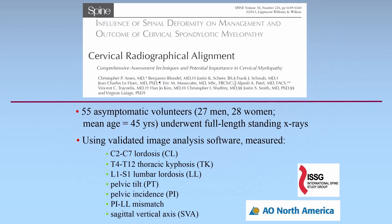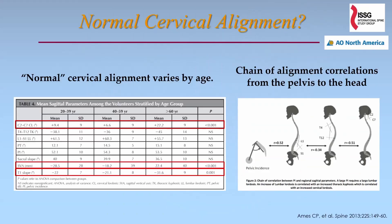Subsequently, in a study led by Chris Ames in collaboration with the ISSG and AO North America, we looked at 55 asymptomatic volunteers using long cassette x-rays. We found that normal cervical alignment varies significantly by age. We also found that there's a significant chain of correlations extending from the pelvis up to the head, which emphasizes the need to take into account the alignment of the rest of the spine and pelvis when looking at cervical alignment deformities.